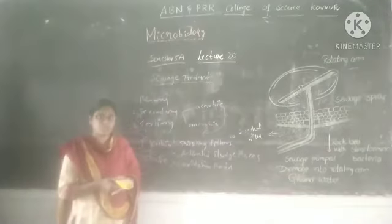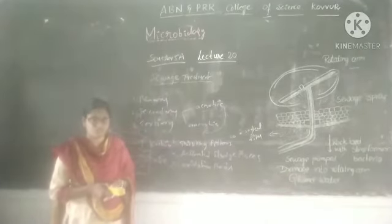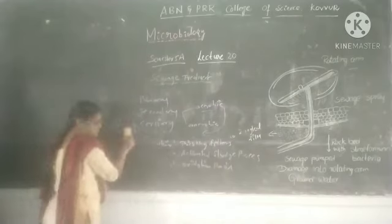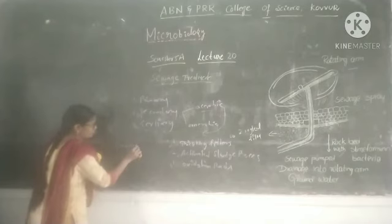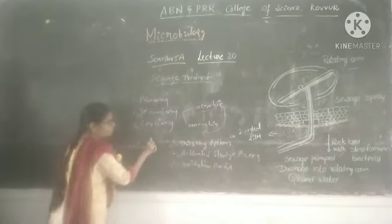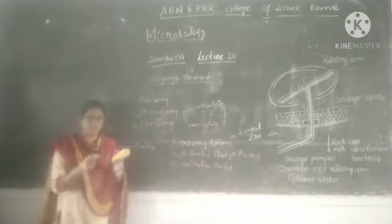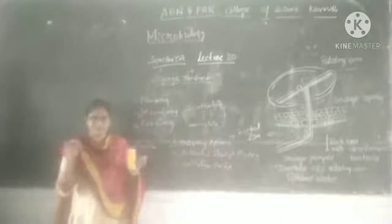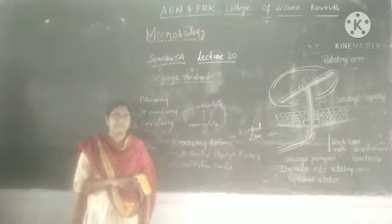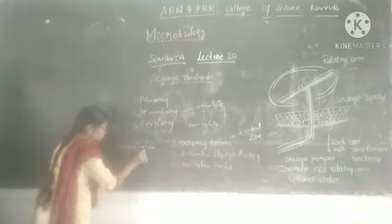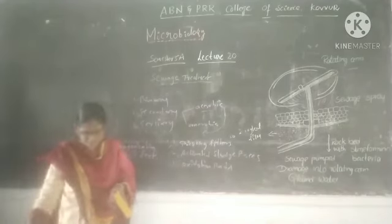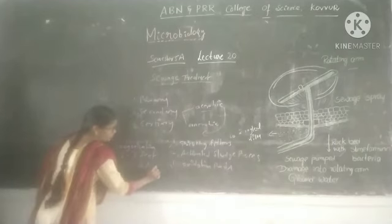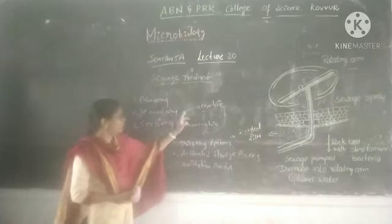The third aerobic method is oxidation ponds, which is a natural process. The ponds collect water, and a bed of about 2–3 feet is prepared. The ponds collect oxygen, and BOD is reduced through this secondary aerobic treatment.